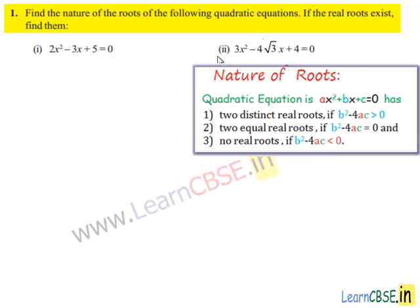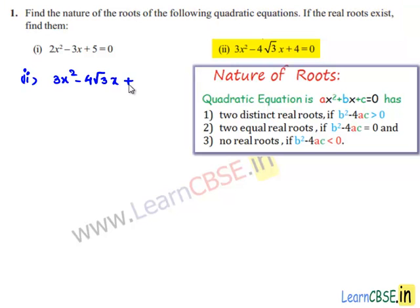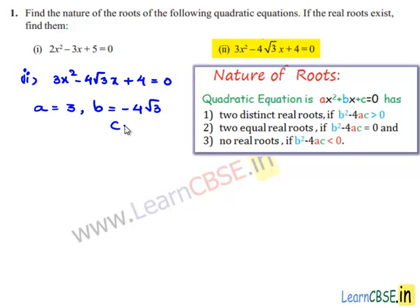Now coming to the second bit, the given equation is 3x² minus 4√3x plus 4 is equal to 0. On comparing the given equation with the standard equation ax² plus bx plus c is equal to 0, we get a is equal to 3, b is equal to minus 4√3, and c is equal to 4.